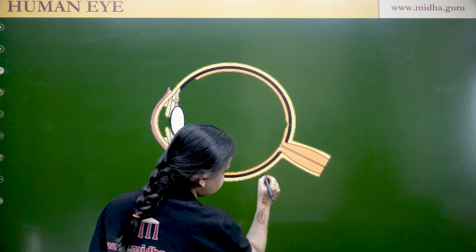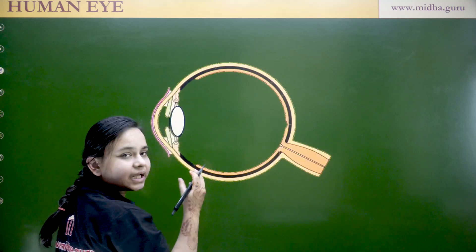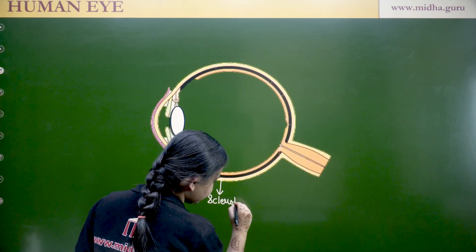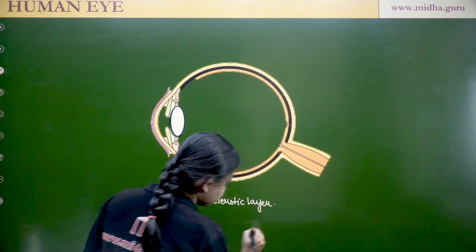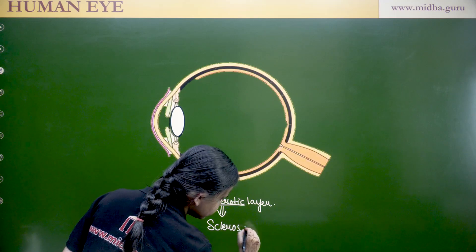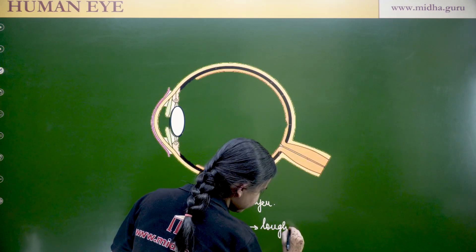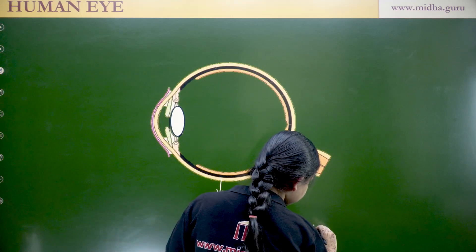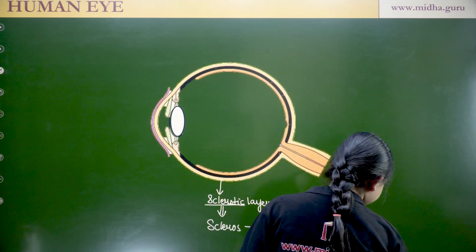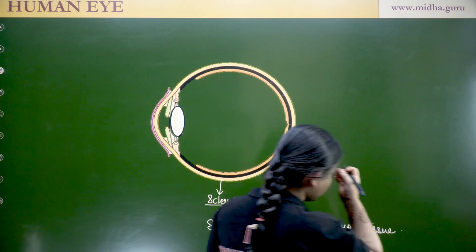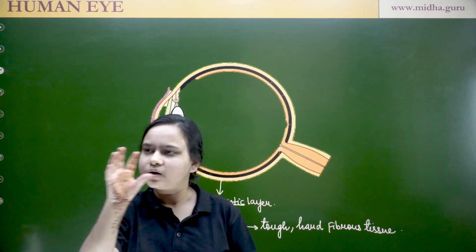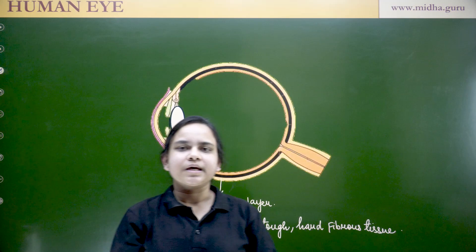This outer layer, represented by the yellow color in the diagram, is the sclerotic layer. The word 'sclerotic' is derived from 'scleros', which means tough, hard, and fibrous tissue. Another important property: this sclerotic layer looks like a white opaque substance.